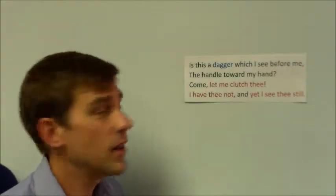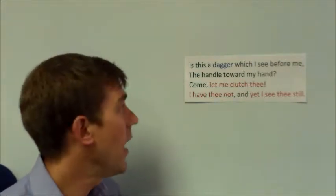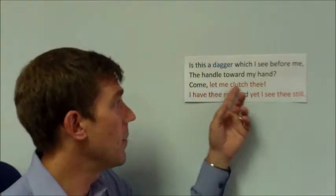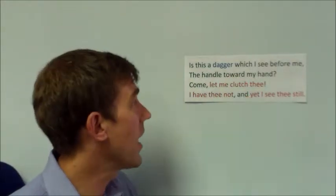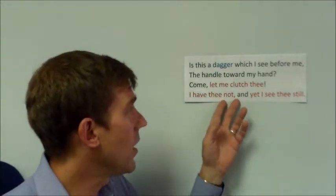The apostrophe in this passage is in the final two lines. The context is where Macbeth is imagining that he sees the dagger and then tries to grab it, speaking directly to it. That's where we see the apostrophe, when he says, 'let me clutch thee' — thee being the dagger itself — and furthermore, 'I have thee not, yet I see thee still.'